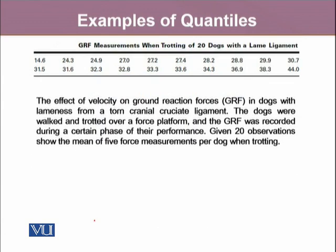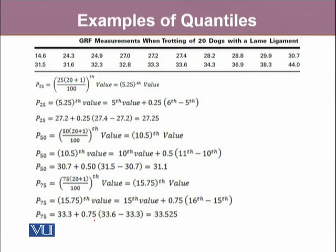Let's look at this data, where the researcher is trying to see the effect of velocity on ground reaction force in dogs with lameness from a torn cranial cruciate ligament. The dogs were walked and trotted over a force platform, and the GRF was recorded during a certain phase of their performance. Given 20 observations, showing the mean of 5 force measurements per dog when trotting, we want to see how many dogs had walked until a certain point by calculating the percentiles.